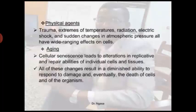The last group is aging. Cellular senescence leads to alterations in the replicative and repair ability of individual cells and tissues. At a certain age, cells of an individual tend to lose the ability to replicate and repair to their normal morphological, molecular, and functional states. All of these changes result in a diminished ability to respond to damage, and eventually cell death and death of the organism can occur.